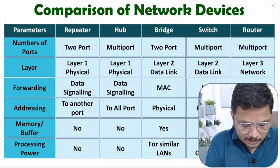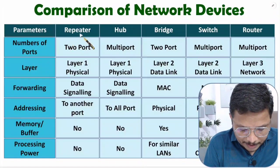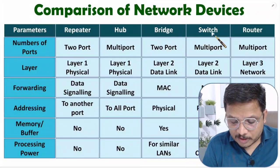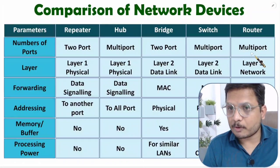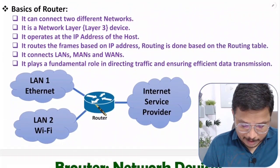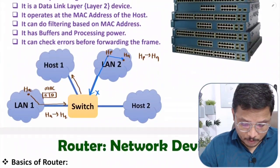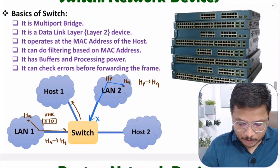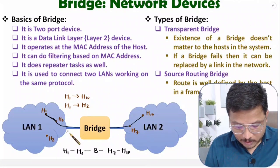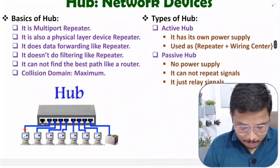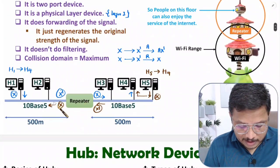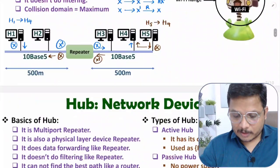Let us compare all those devices with respect to number of ports. Repeater has two ports, hub has multiple ports, bridge has two ports, switch has multiple ports, and router also has multiple ports. If you observe here, the router is connected with multiple ports, switch is also connected with multiple ports, bridge is used to connect two similar LANs so it is a two-port device, hub is a multi-port device, and repeater is also a two-port device.